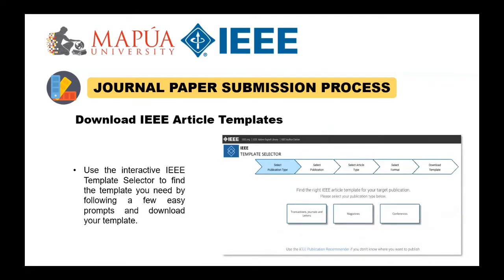IEEE article templates let you quickly format your article and prepare a draft for peer review. Templates help with the placement of specific elements such as the author list, and also provide guidance on stylistic elements such as abbreviations and acronyms. Use the interactive IEEE template selector to find the template you need by following easy prompts.